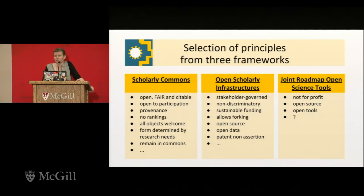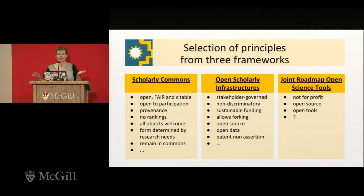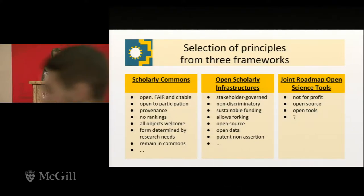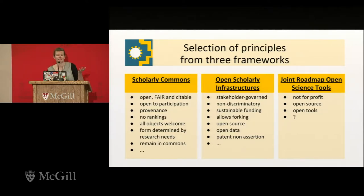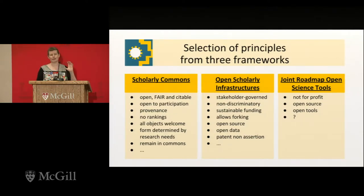The third is the recent Joint Roadmap for Open Science Tools, which brought together many people and organizations — in this case, not-for-profit providers of open source tools. Those are their criteria. The Scholarly Commons Principles cover research outputs being FAIR and open, facilitating open participation, provenance, and no intrinsic rankings. The Open Scholarly Infrastructure principles specifically address governance, financial sustainability, stakeholder governance, and non-discriminatory governance.